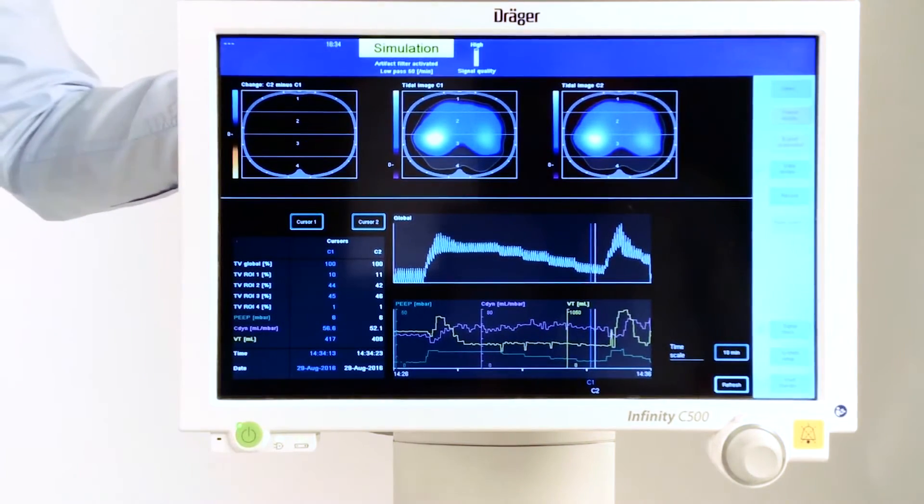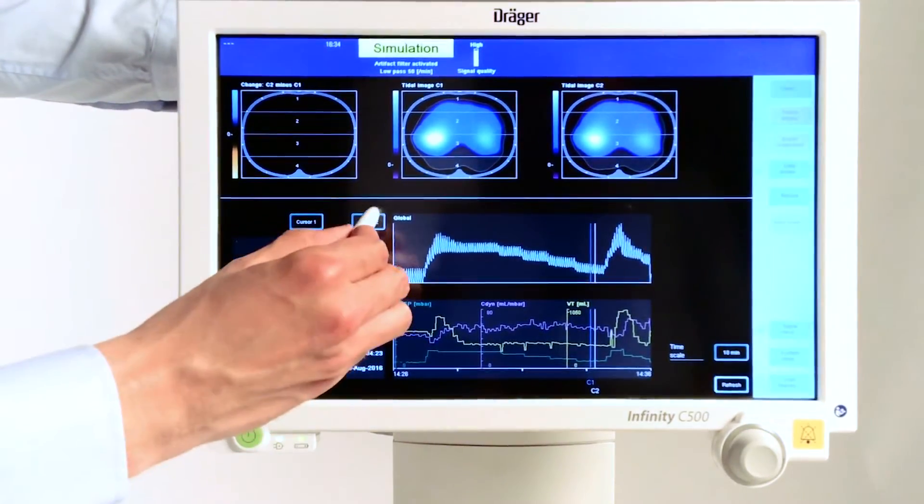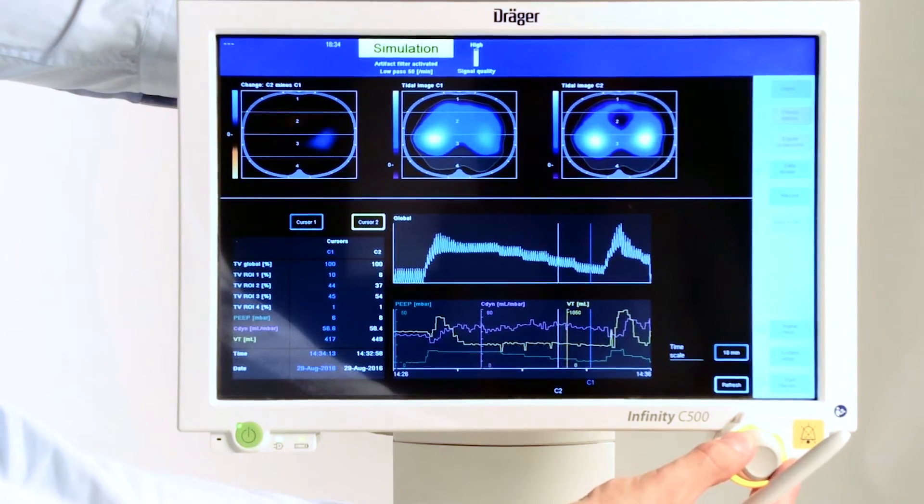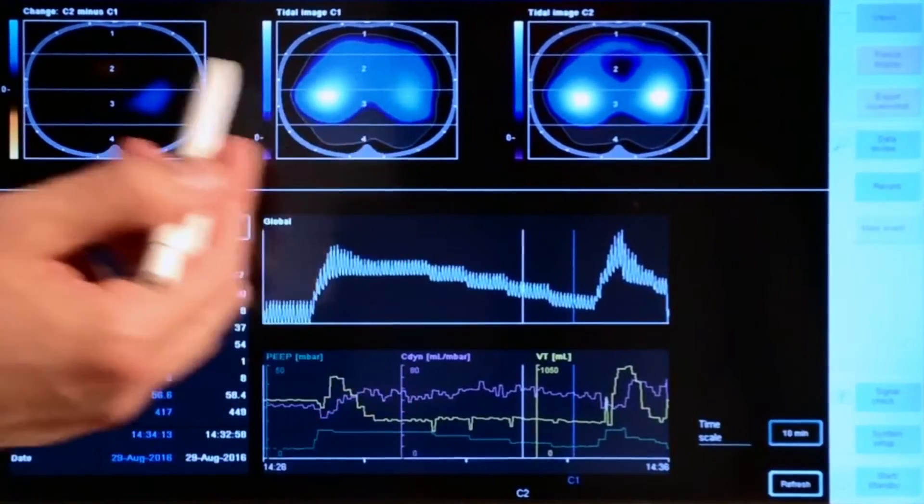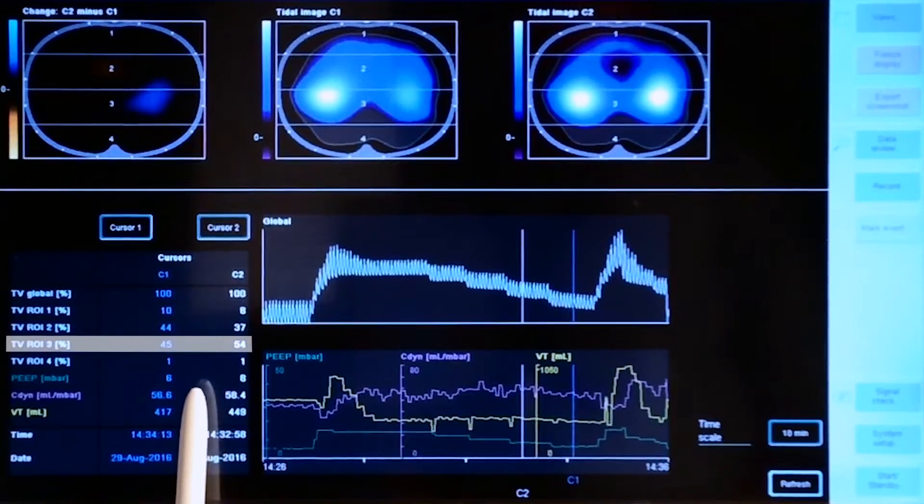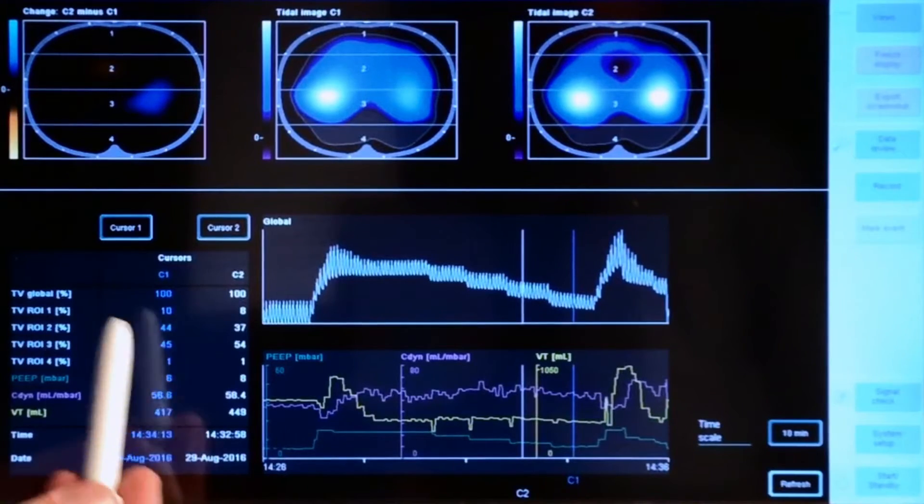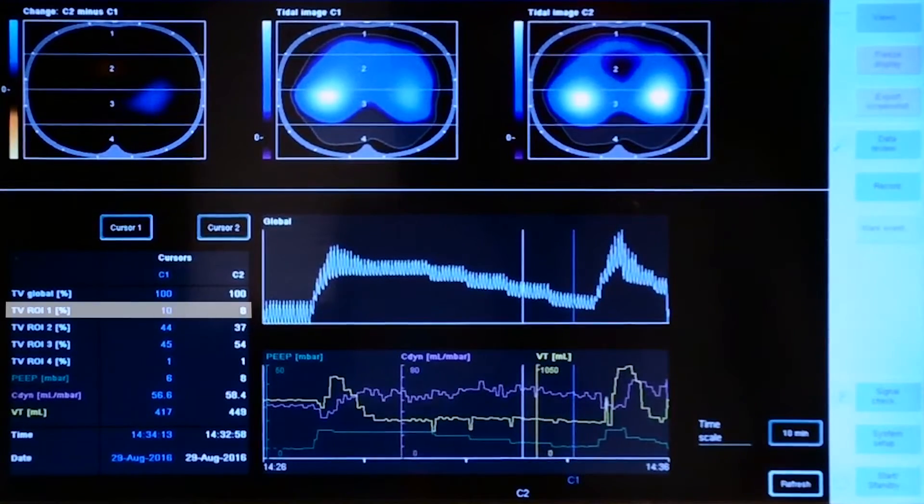At a PEEP level of 6 the occurrence of overdistension is very unlikely. Now we can move cursor 2 backwards to the next higher PEEP level of 8. When we compare these two images we do not see a big change. We get slightly more ventilation in region of interest number 3 and we have a little decrease of ventilation in region number 1 and 2.